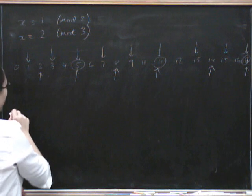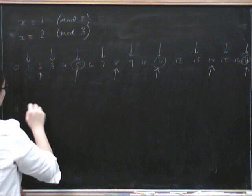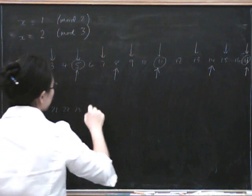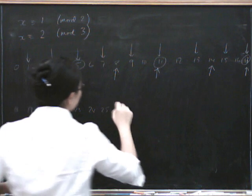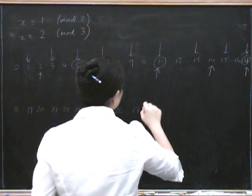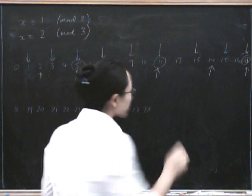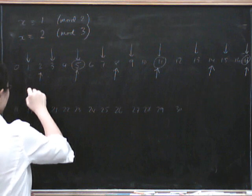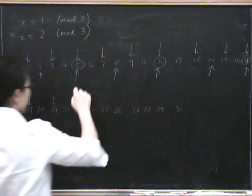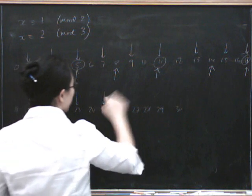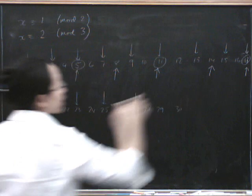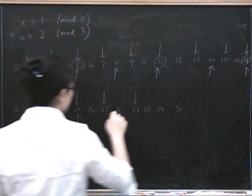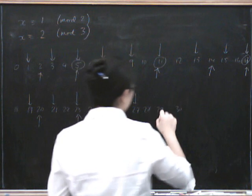Let's try continuing a bit further: 18, 19, 20, 21, 22, 23, 24, 25, 26, 27, 28. See if you can do this as well. Marking the solutions for both conditions, I get solutions here, here, here, here, here, here — and then this one, this one, this one, this one.